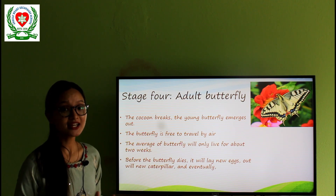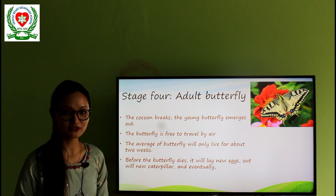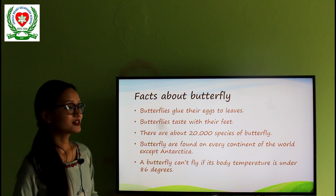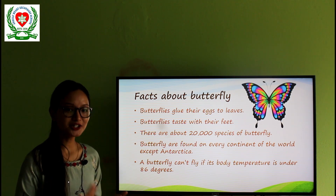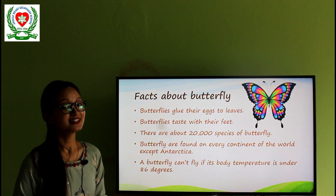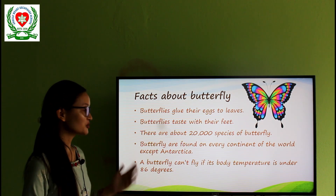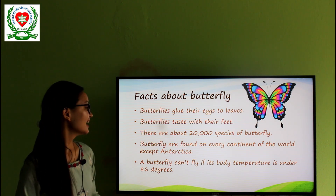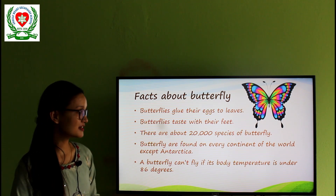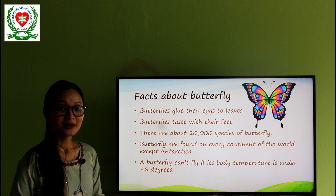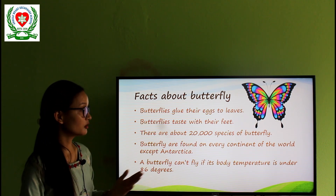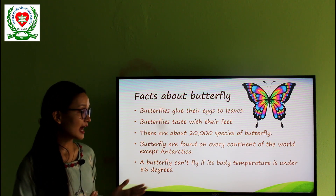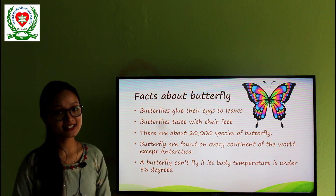So this is the complete explanation about the life cycle of butterfly. Now I am going to show you some interesting facts about butterflies. Number 1: Butterflies glue their eggs to the leaves so that the eggs will not fall. Number 2: Butterflies taste with their feet because they have taste sensors on their feet. Number 3: There are 20,000 species of butterfly. Number 4: Butterflies are found on every continent of the world except Antarctica. Number 5: A butterfly can only fly if their body temperature is above 86 degrees.